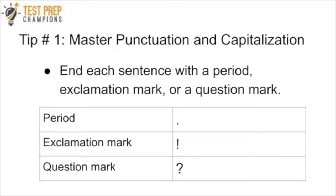This first tip will help you with punctuation and capitalization so you don't lose points you deserve to get. In your writing, you must end each sentence with a period, exclamation mark, or question mark. Exclamation marks are for strong feelings or excitement, question marks are for questions, and periods are for statements. In your essay, try to stick mainly to periods — when in doubt, just stick to periods.